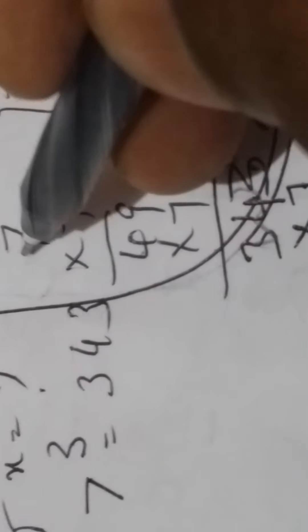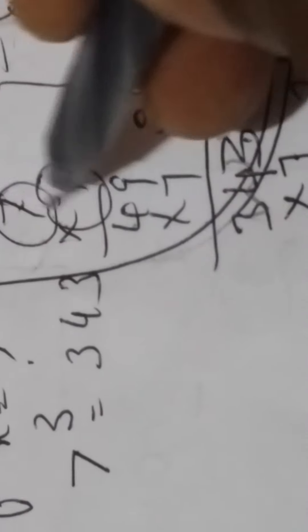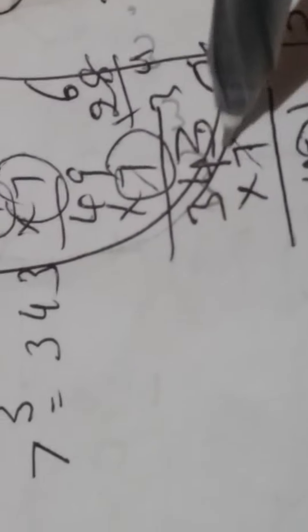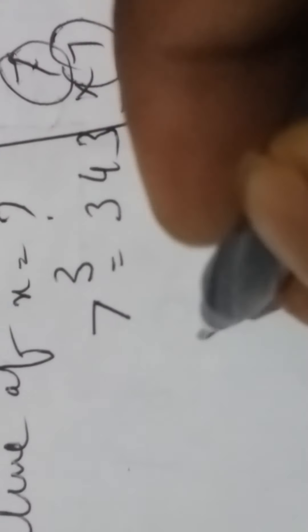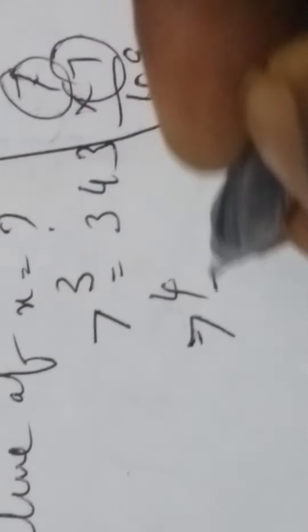Now 2401, how many times 7? 4 times: 1, 2, 3, 4. This means in solution, if you know, here's one more: 7 to the power 4 is equal to 2401.